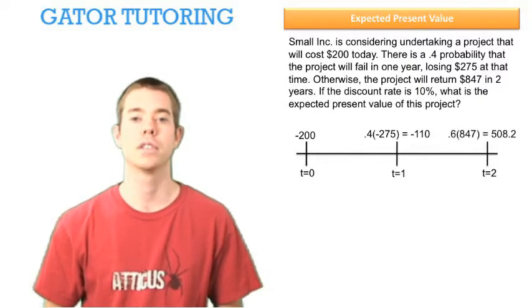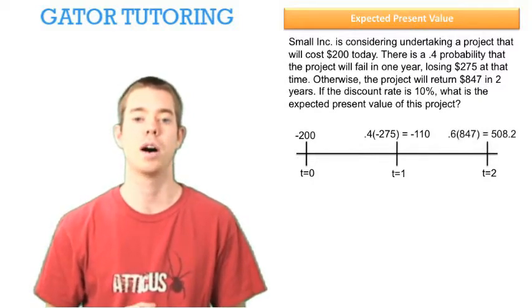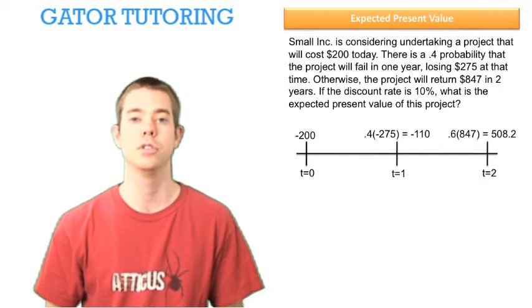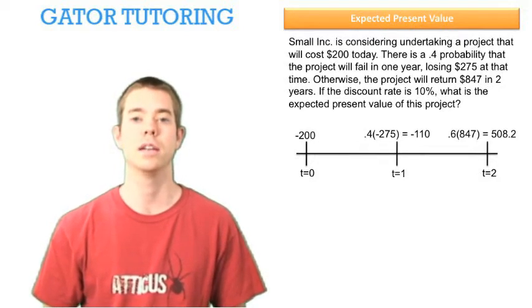In time period two, we have a 60% chance of receiving positive $847, so our expected value in time period two is positive $508.20.